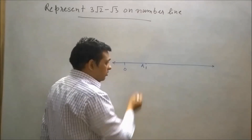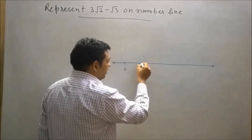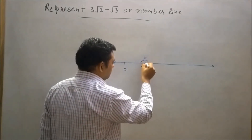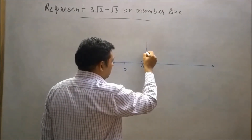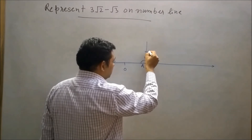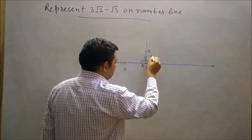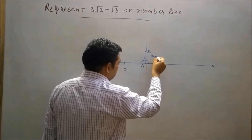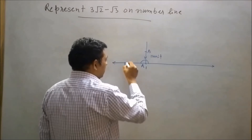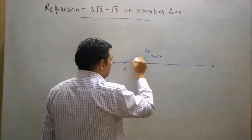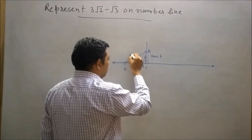Now draw a perpendicular on OA as AB. Let's say AB is 1 unit distance. Now join O to B. Then OB will be √2.